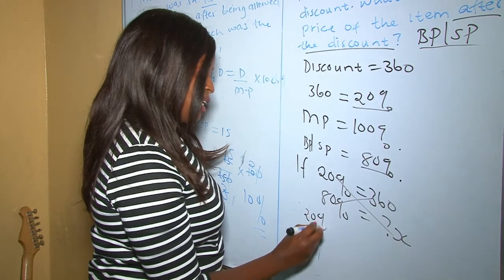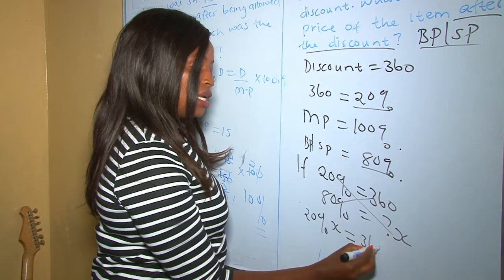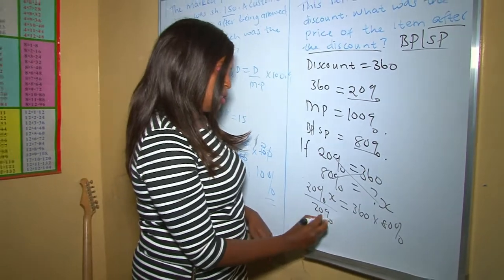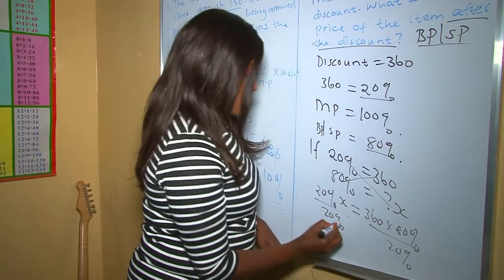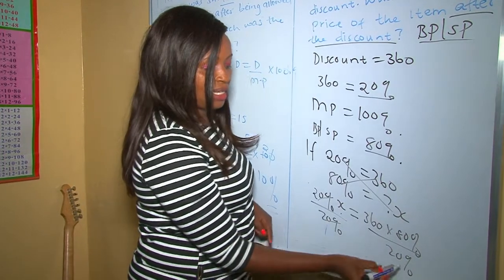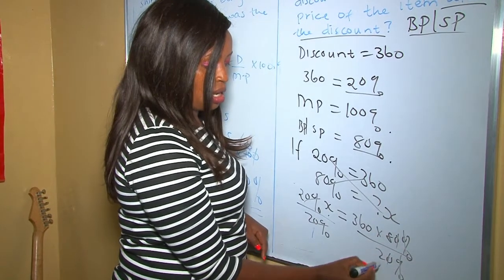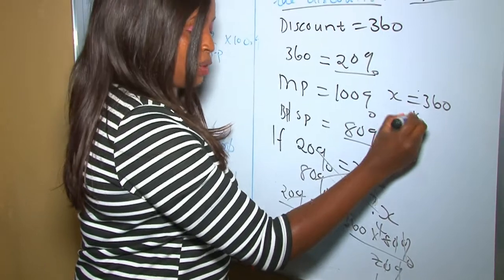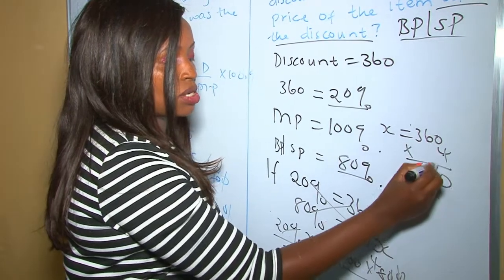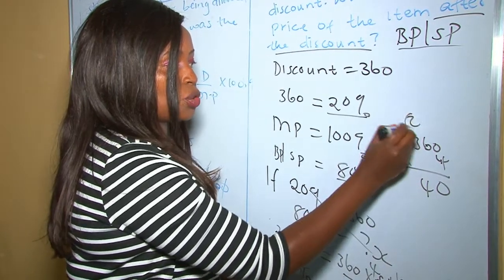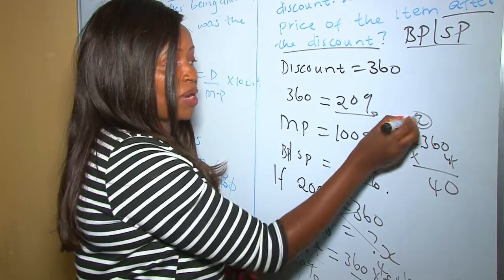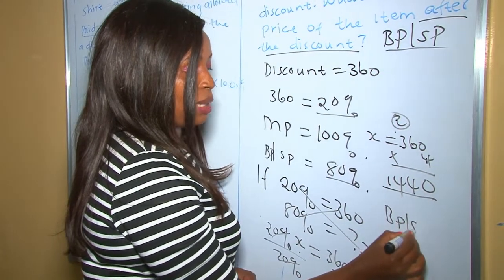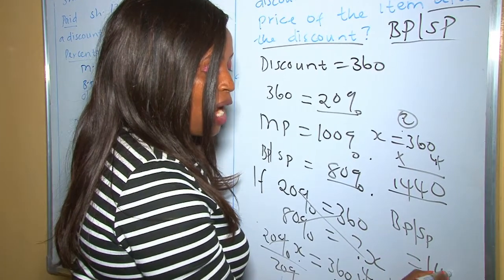Dividing both sides by 20%: x = (360 × 80%) ÷ 20% = 360 × 4 = 1440. Therefore our buying price or selling price was 1440 shillings.